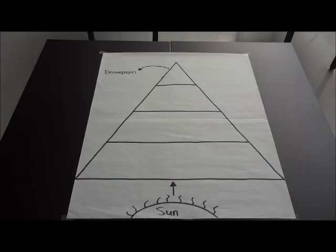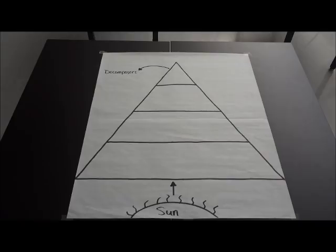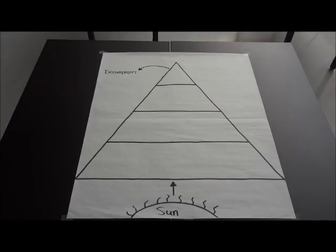Before we can put our food chain onto our energy pyramid, we first have to figure out what each level would be labeled. We need to notice that there is an arrow pointing from the sun to the bottom level of the energy pyramid. The arrow is showing us which way the energy is flowing, so the sun's energy is going to flow to the bottom level of the energy pyramid. We'll find out what level that is in a second.